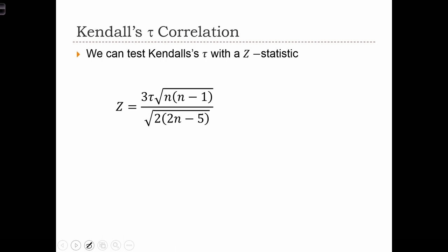We can take this tau and apply a standardization and end up with a Z statistic. So if we apply this formula to the tau that we've just computed, we end up with a Z statistic, and we can use that Z statistic in some inferential testing. So in our case, we have 3 tau. So tau was 0.2. N was 10. So we've got 10 times 9, so root 90, over the square root of 2, and then 2 times 10 is 20 minus 5, over 15.